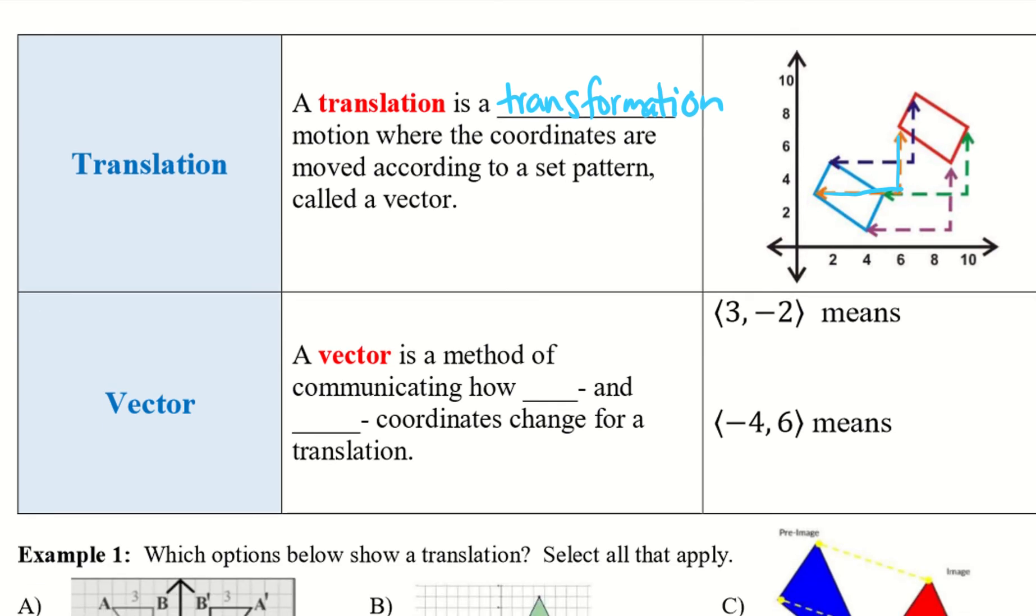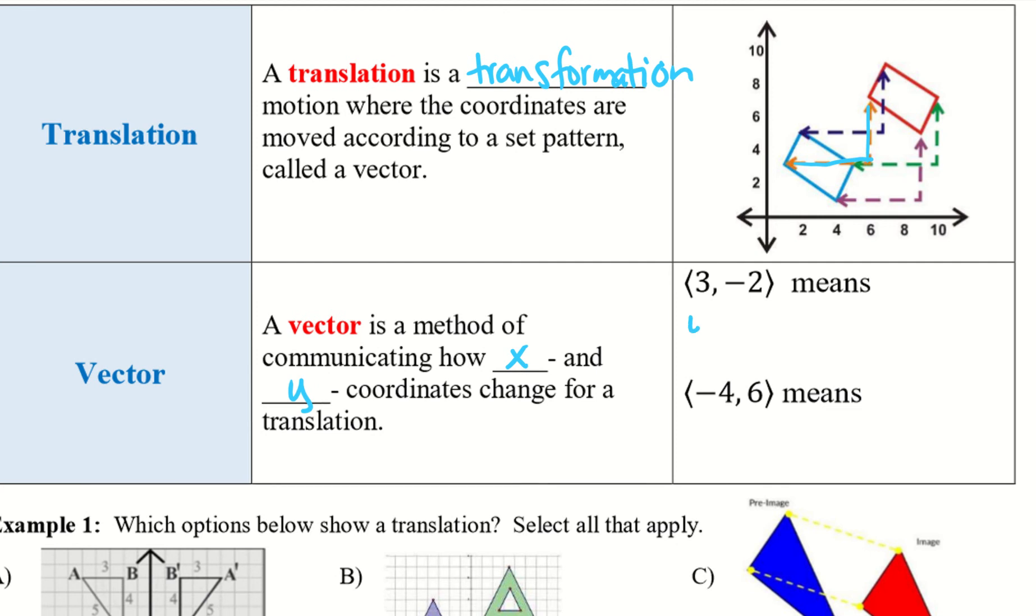So a vector is a method of communicating how x and y coordinates change for a translation. So if I have 3, negative 2, that means right 3 and down 2. So if we think about these as x and y, my x axis is left and right. So that means if I have a positive, I'm going to go to the right and negative go to the left. And then y is my up and down axis. So negative goes down, which means positive goes up. So taking a look at the negative 4, 6, that means I'm going to go to the left 4 and up 6.